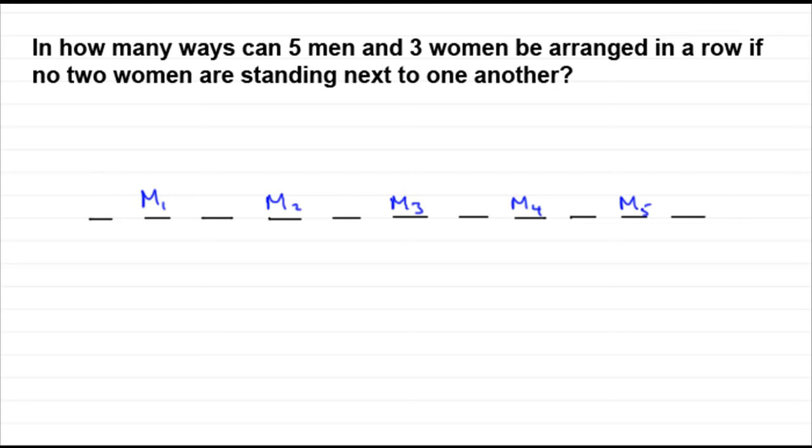Now how many ways can those men rearrange themselves amongst themselves? That's the first thing. Well we've already seen in the past that if that were the case then N items can be rearranged amongst themselves as long as they're different N factorial ways. So in this case it's going to be five factorial ways. Five times four times three times two times one.